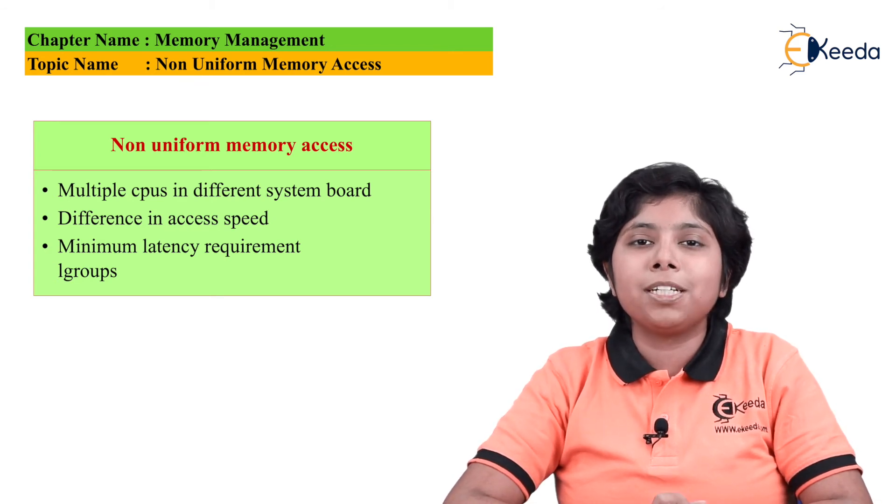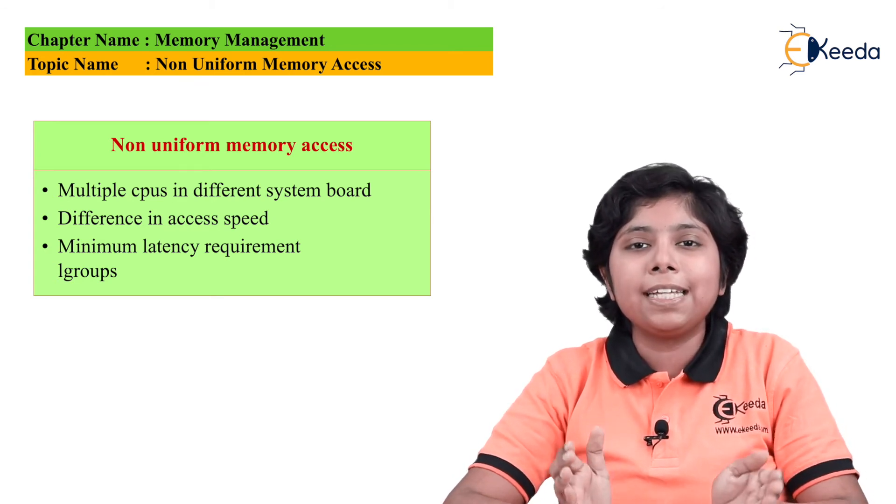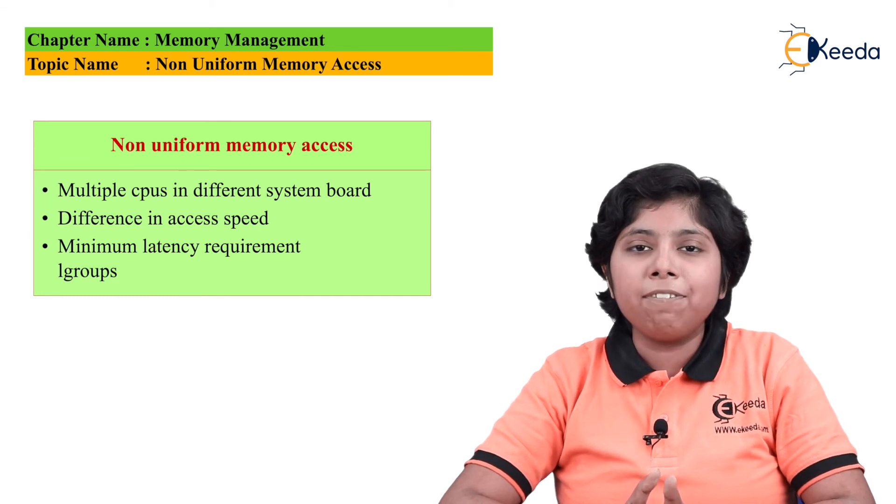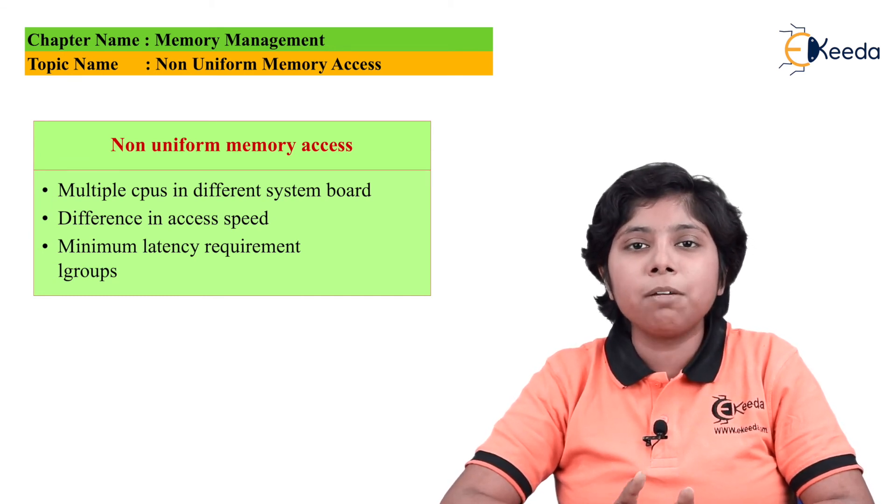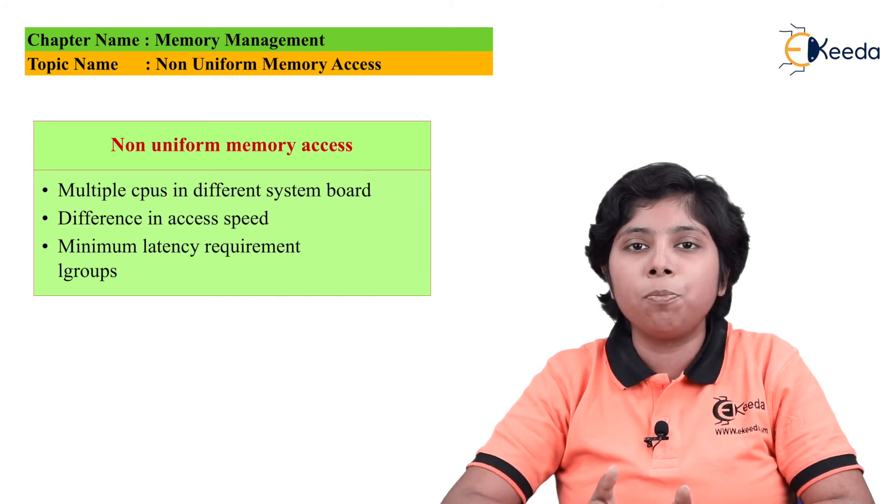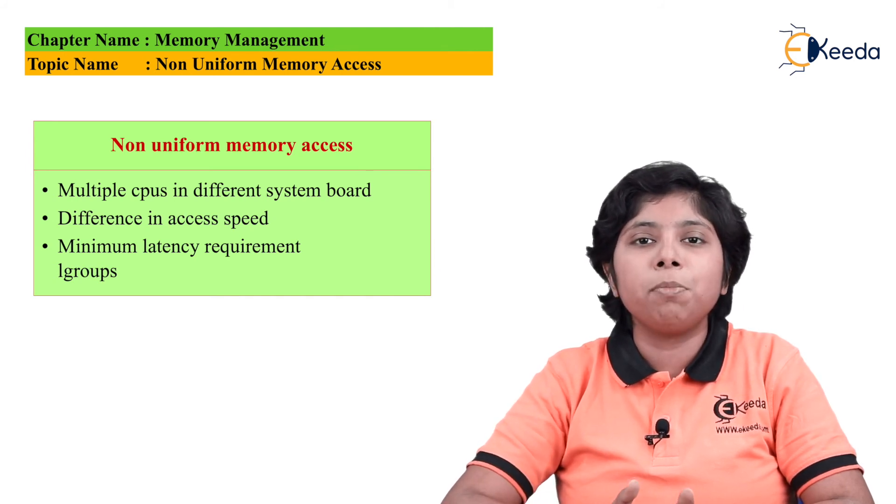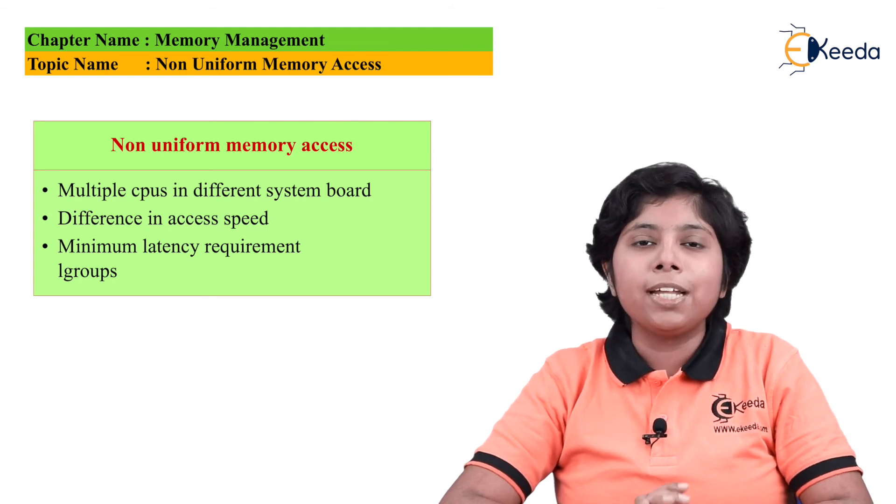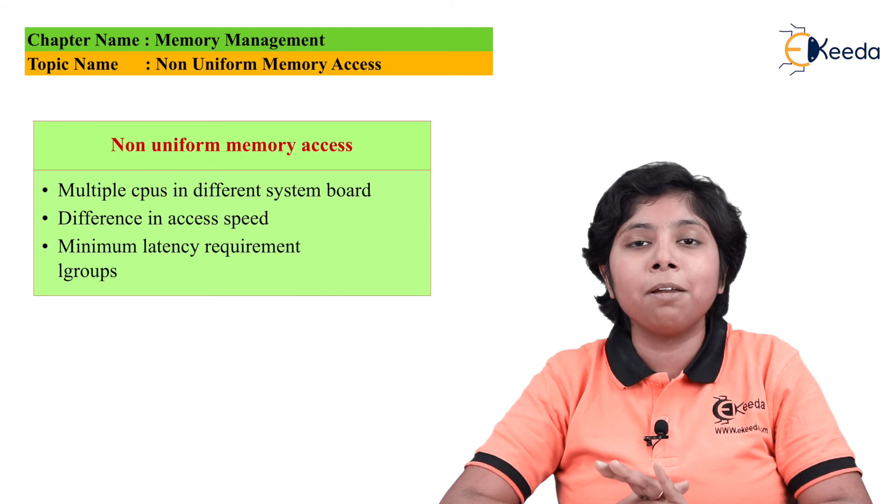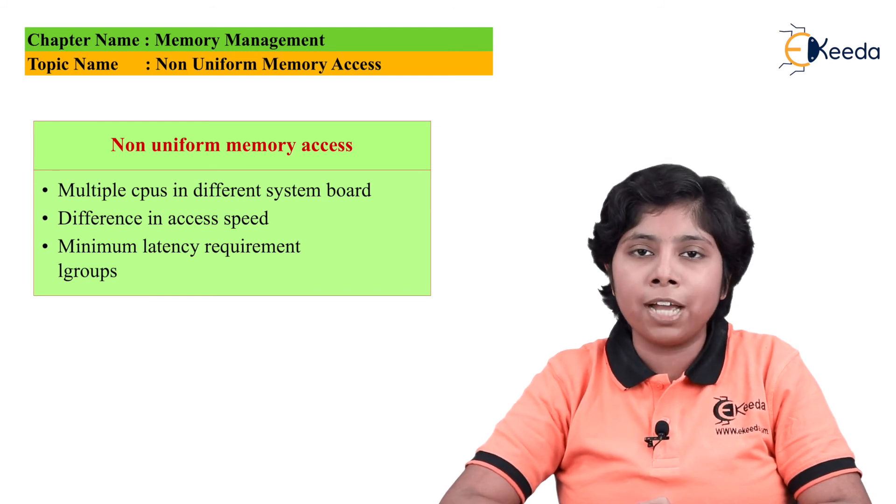Whenever it wants to allocate a thread, it should allocate all the threads within a process and all the pages that the process will be required inside a single L group. If the L group is not sufficient to meet this requirement, then it may choose the closest L group to meet the rest of the resource requirements. In this way, L groups can improve the performance and minimize the effective algorithmic access time, giving the maximum CPU throughput.